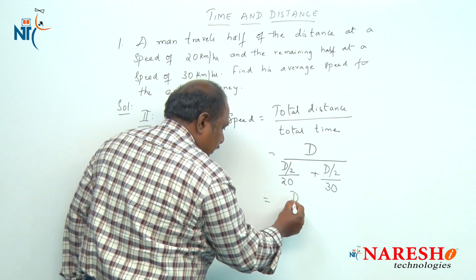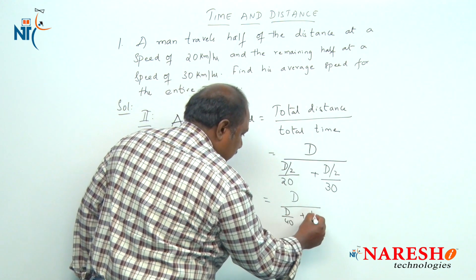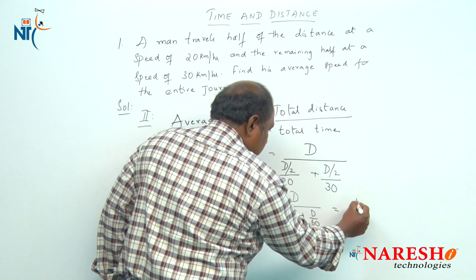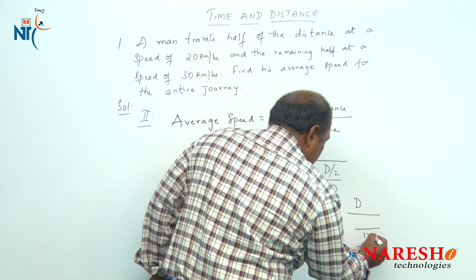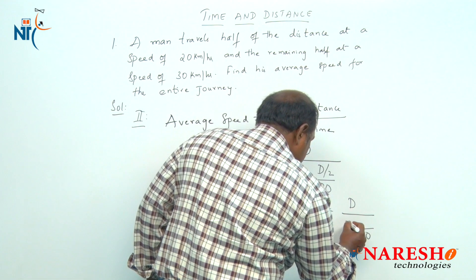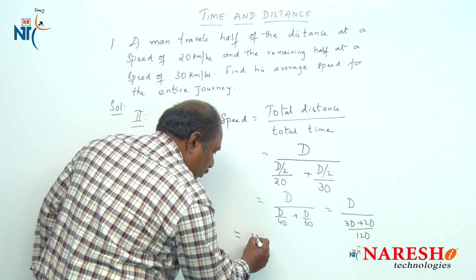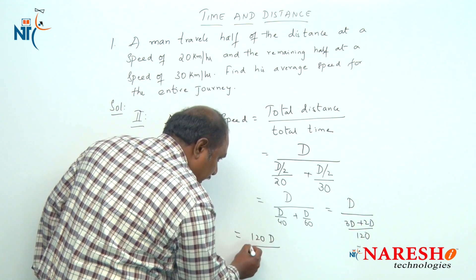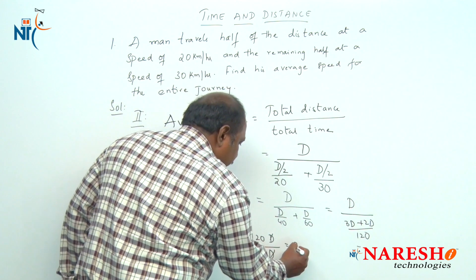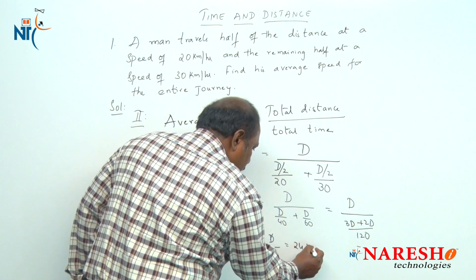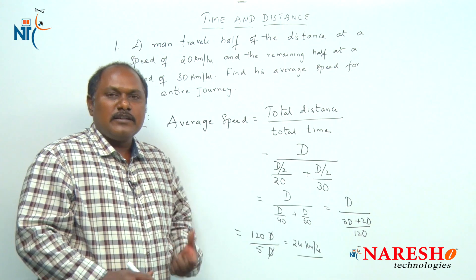Solving this: average speed equals d divided by (d/40 + d/60). The LCM of 40 and 60 is 120, so the denominator becomes (3d + 2d)/120 = 5d/120. Therefore average speed equals d divided by 5d/120, which gives 120/5 = 24 km per hour. This is the second method of solving the problem.